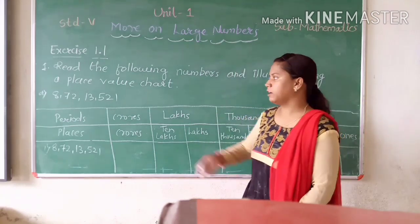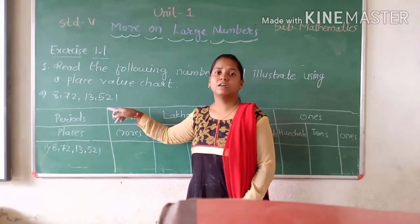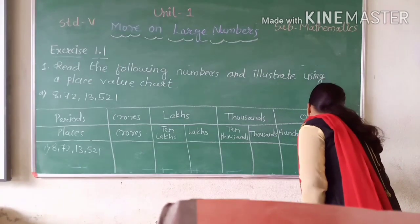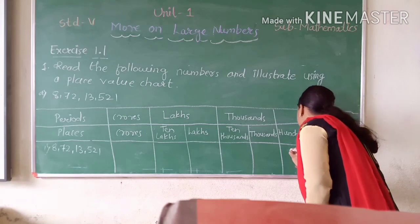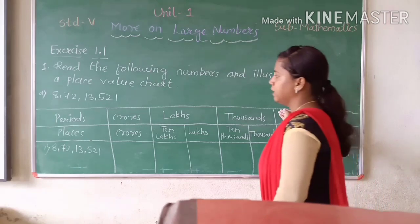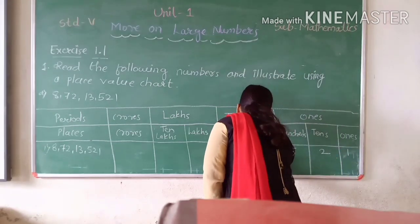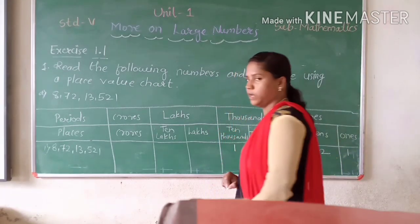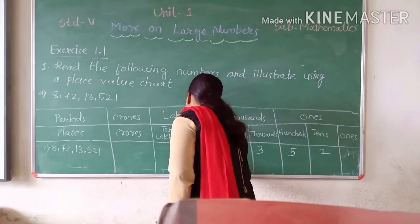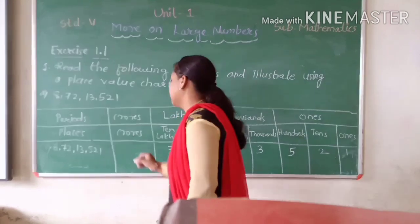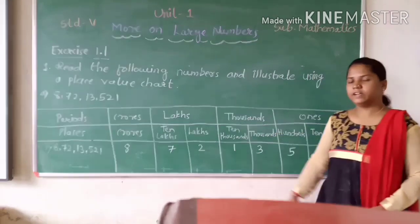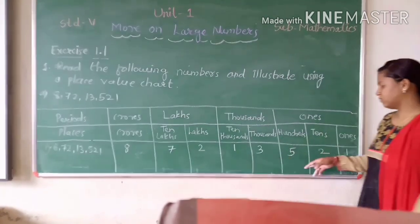As I told you, always start from the right side number. Crore is 8, so it is 1 crore. 8 crore, 72 lakhs, 14,000, 521.